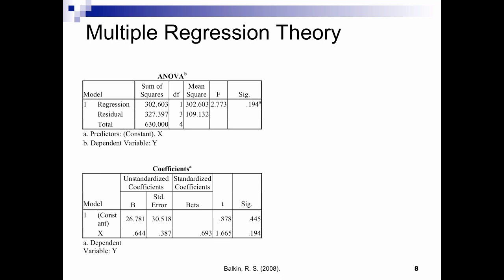When I run a multiple regression in SPSS, I can look at the significance of an F-test and see if my model is significant. I can also look at my beta weights and see the degree of change between my predictor variable and criterion variable. Obviously, if my model is not significant, then I'm saying that there's no significant relationship between the two variables.